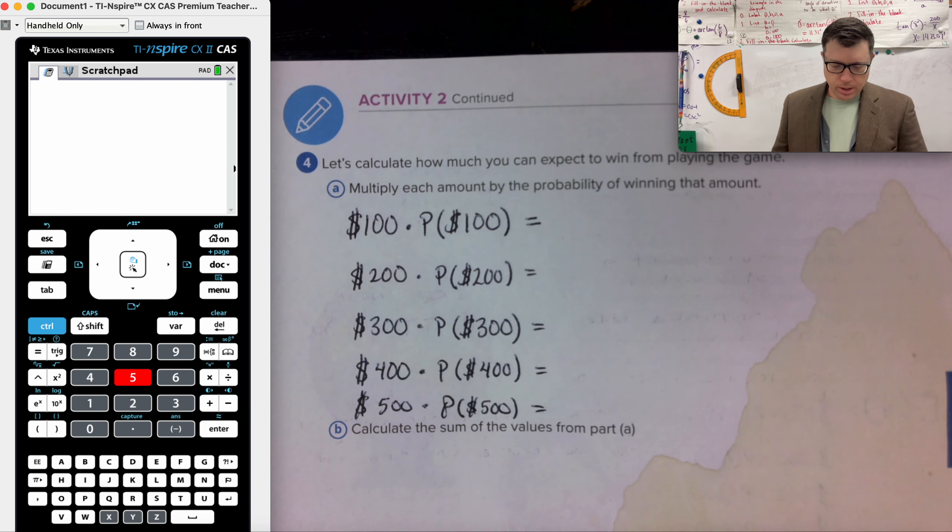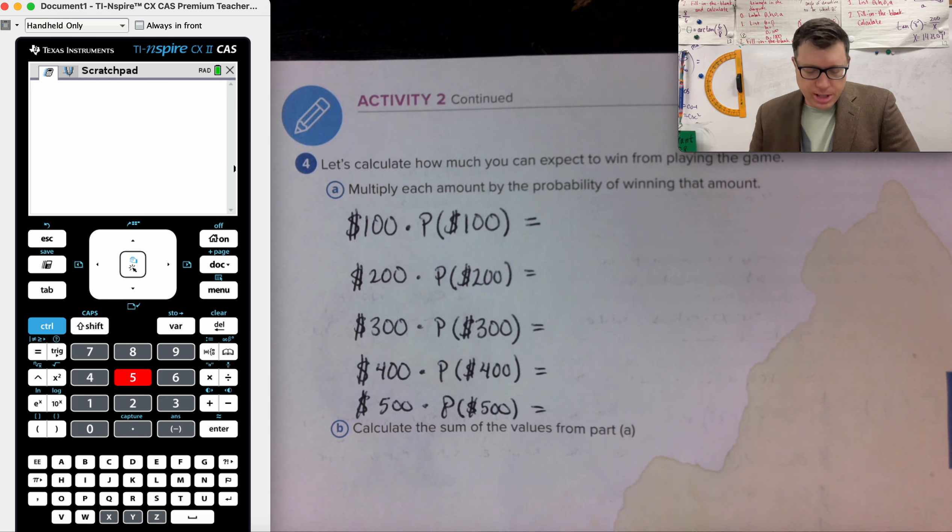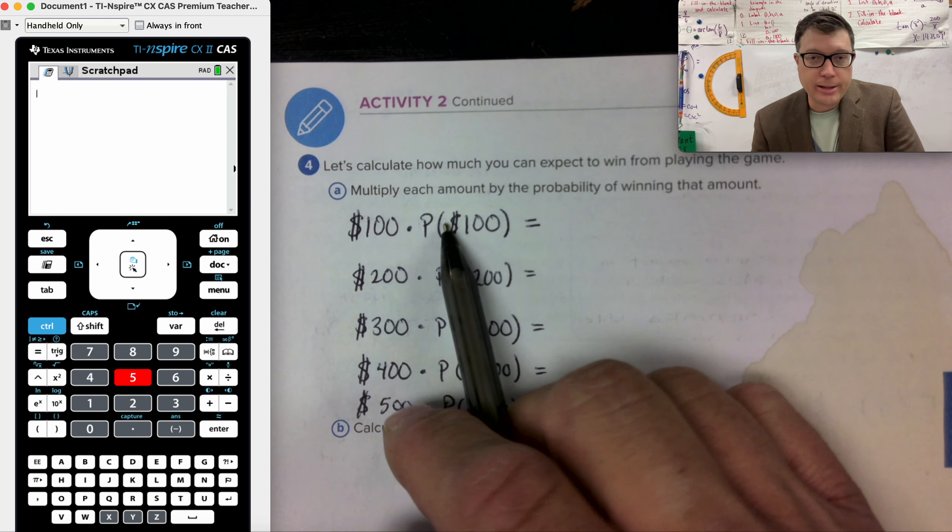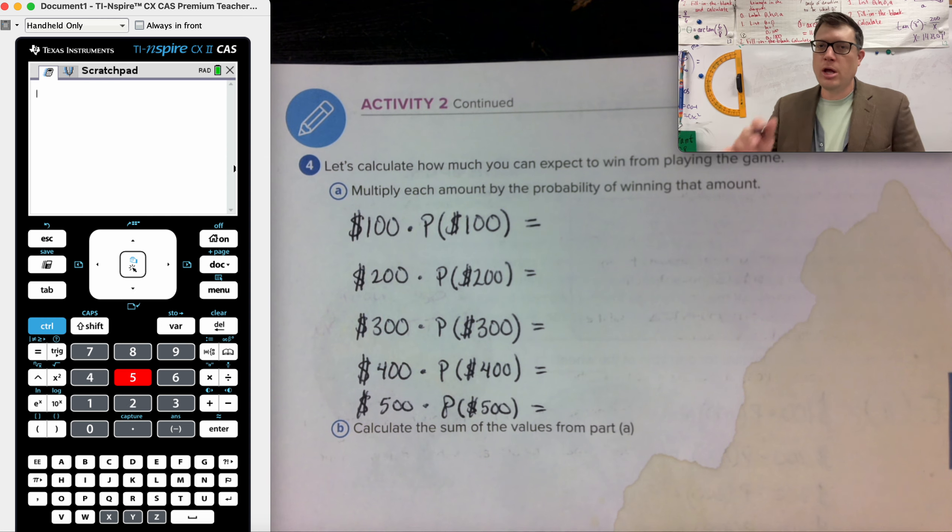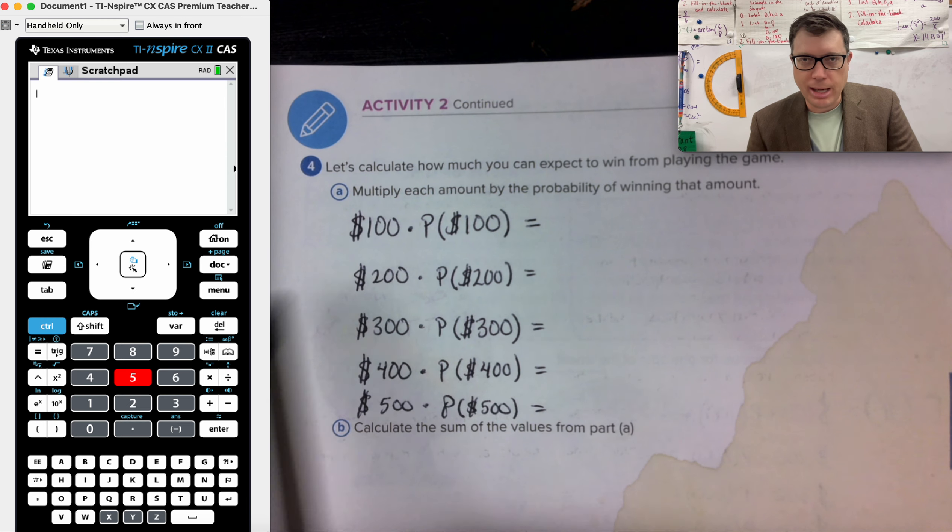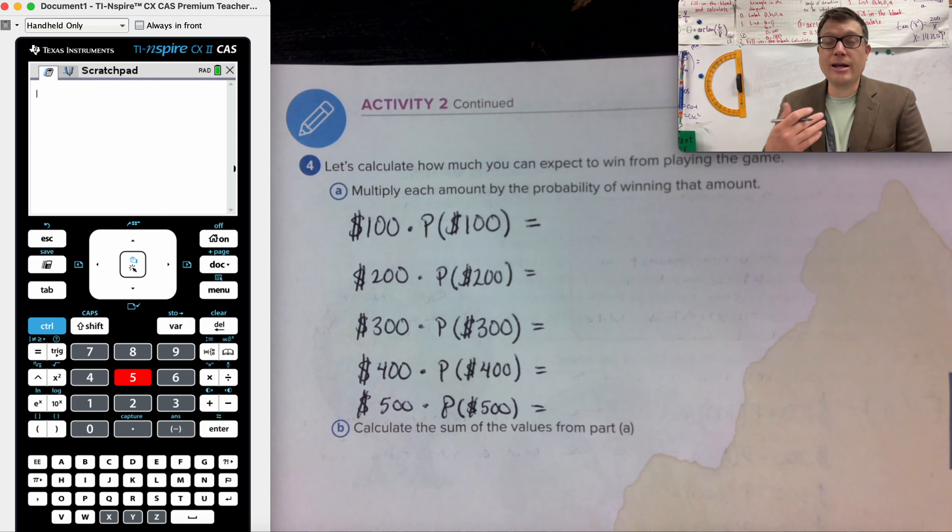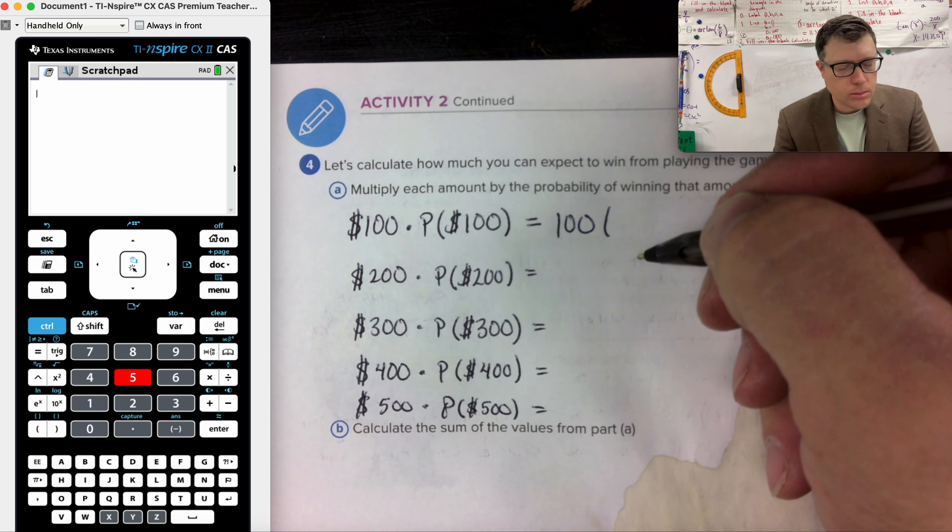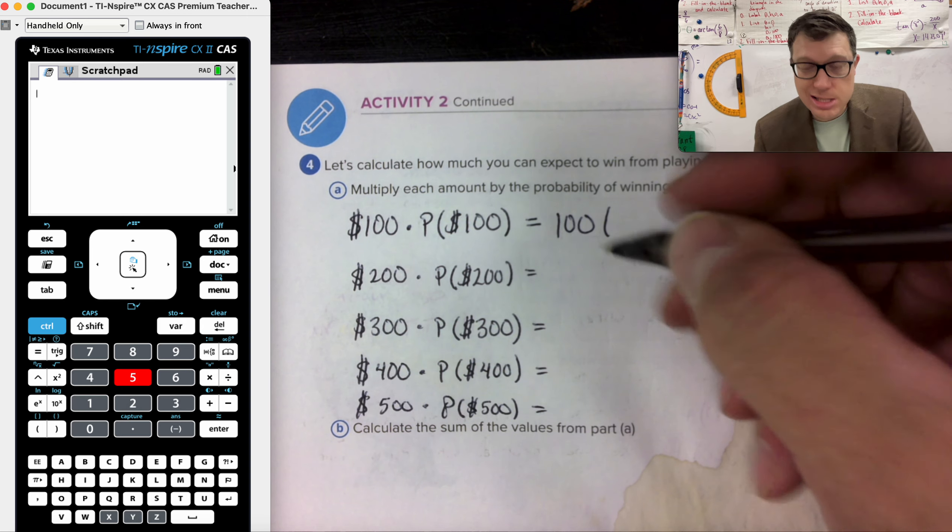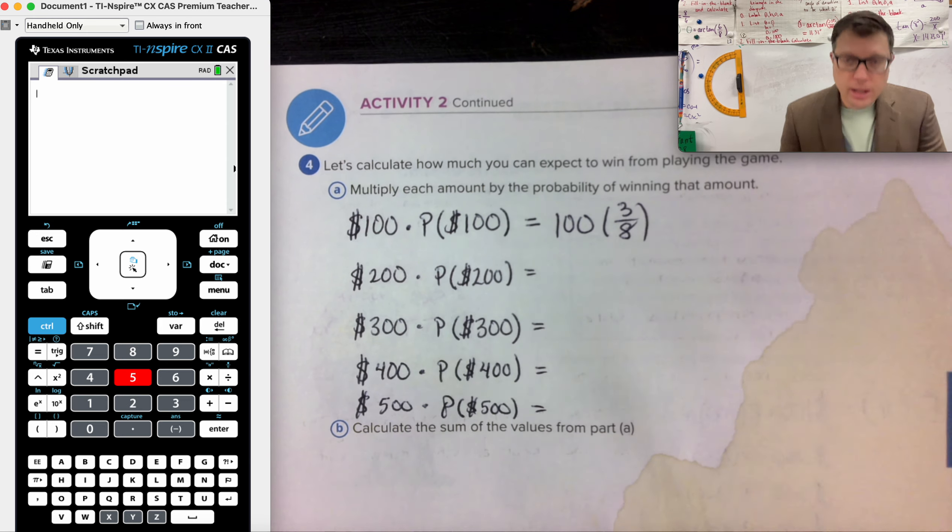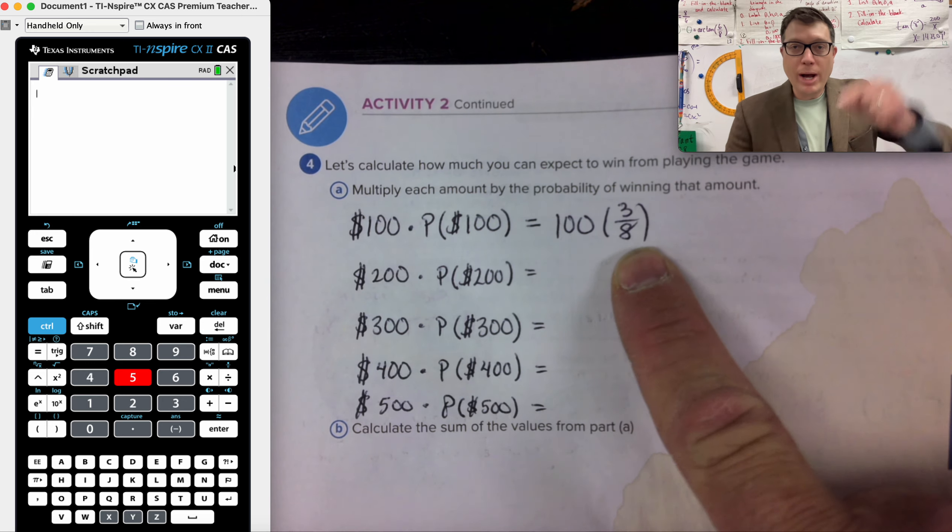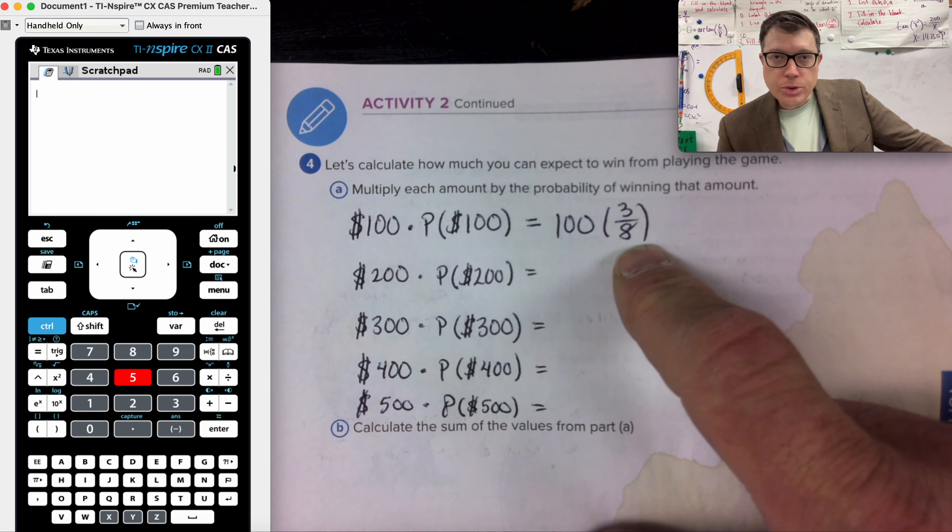So we have those fractions. Expected value requires us to multiply our winnings times the probability of winning. Losing is a later conversation, but that would also be taken into consideration. So I'm going to get $100 off the wheel, one eighth of the time, three eighths of the time. Then I'm multiplying the $100 in winnings times the probability of winning that $100, three out of eight.